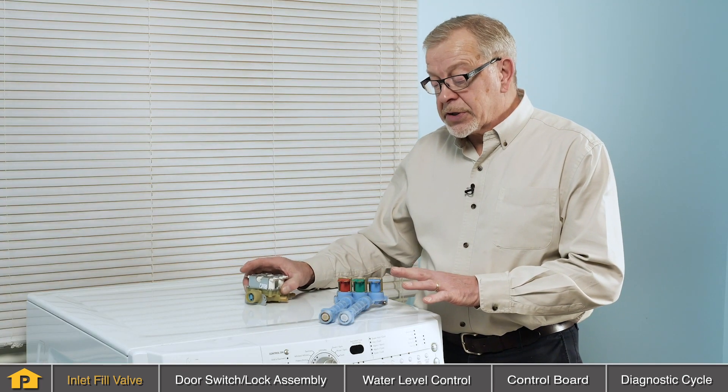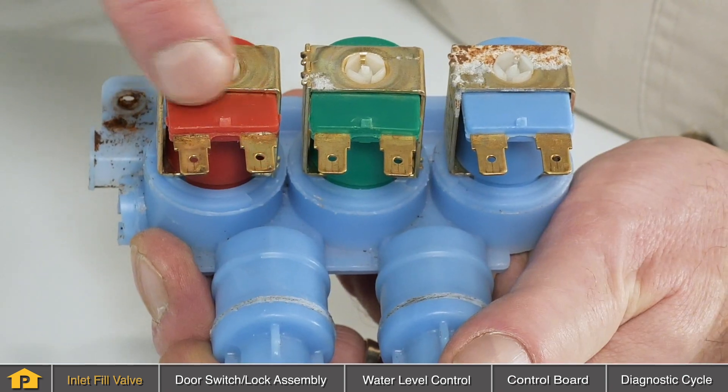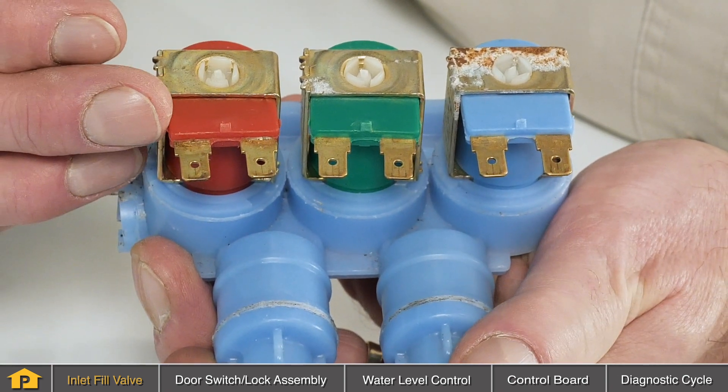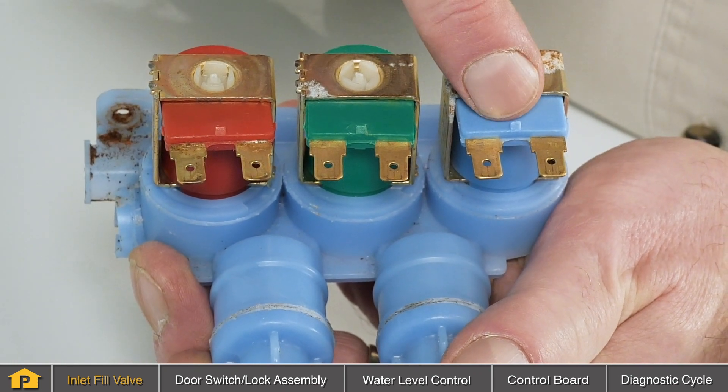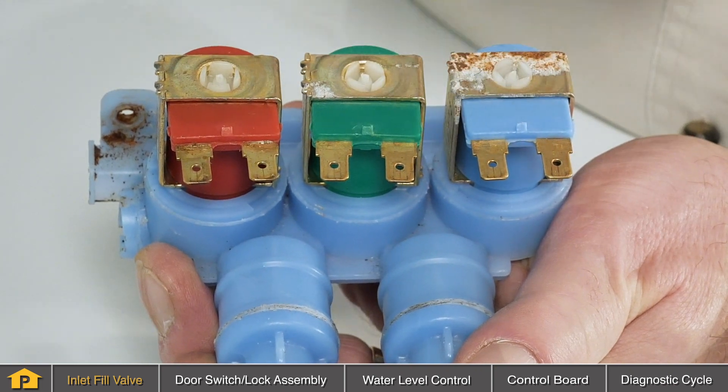For a front load washer to not take on water, typically the fill valve would have to fail on both sides, both the cold and the hot, for it not to take in any water unless you had it set to a straight cold water fill or a straight hot water fill.